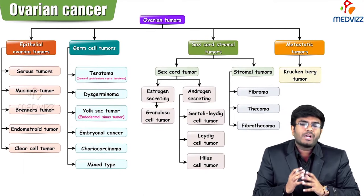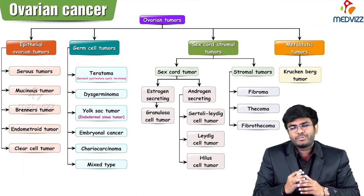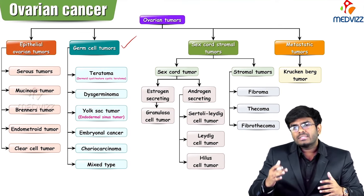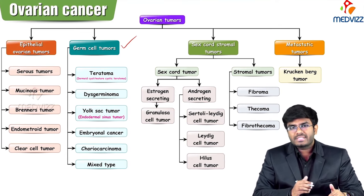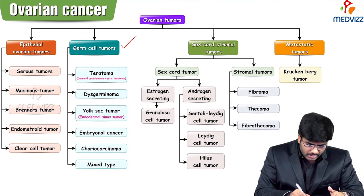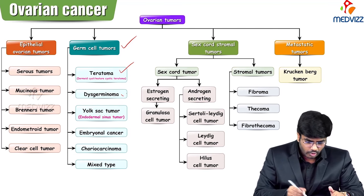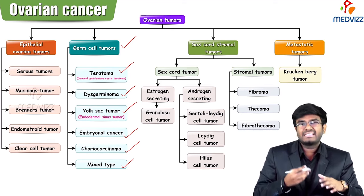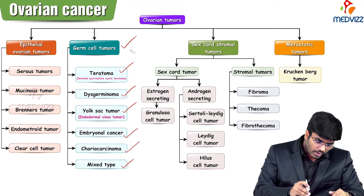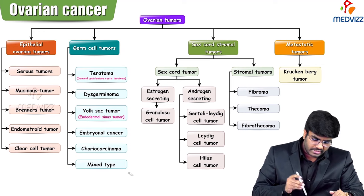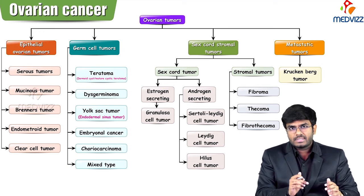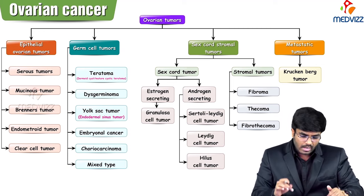Welcome back. In this part two of ovarian tumors, let's discuss germ cell tumors. The examples of germ cell tumors are teratoma, dysgerminoma, yolk sac tumor, embryonal cancer, choriocarcinoma, and a mixed variant. In this video we are going to discuss the main important germ cell tumors.